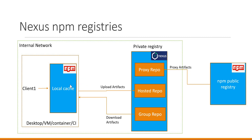Multiple developers in the organization produce their own artifacts which can be shared with other developers. Each of the clients which produces corresponding packages can upload them to the hosted repository in Nexus. All the internal and third-party artifacts can be published to the hosted repository. Now, developers in the organization may need packages from the external registry or packages developed within the internal registry. Instead of downloading the packages from individual repositories, we can group them into a group repository.